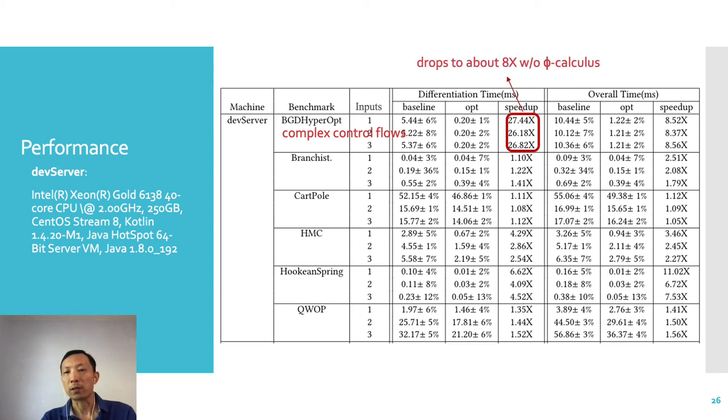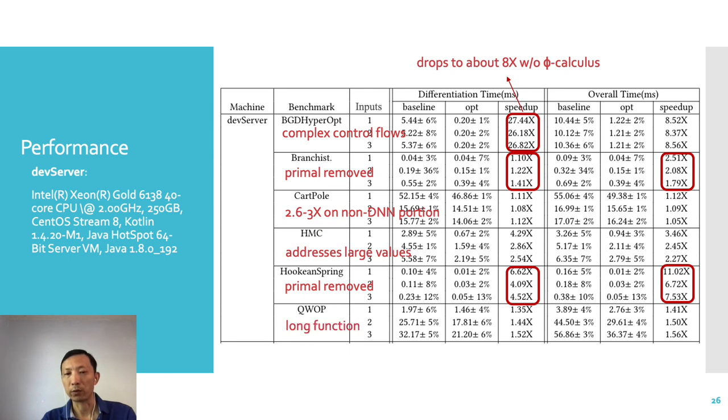On the second and fifth benchmarks, because what they actually need are just the gradients, and Coarsening gives a function to compute the gradients directly, the primal parts in both programs can be removed. On CartPole, the optimization can apply to only the non-DNN part of the program. The speedups on that part are 22.6 to 3 times. HMC and QAWP have either large values or long functionalities. Coarsening can apply to them with no problems.